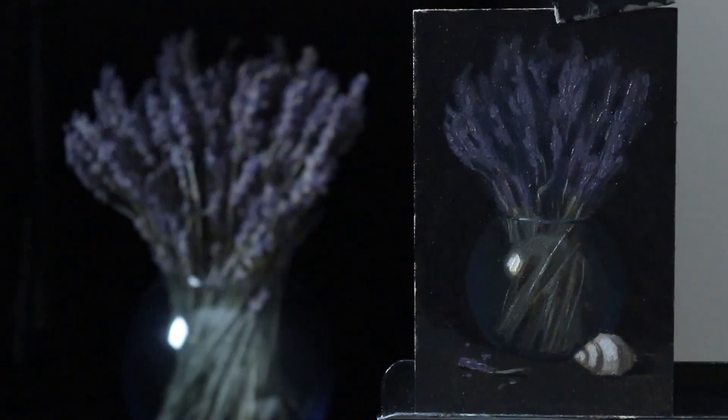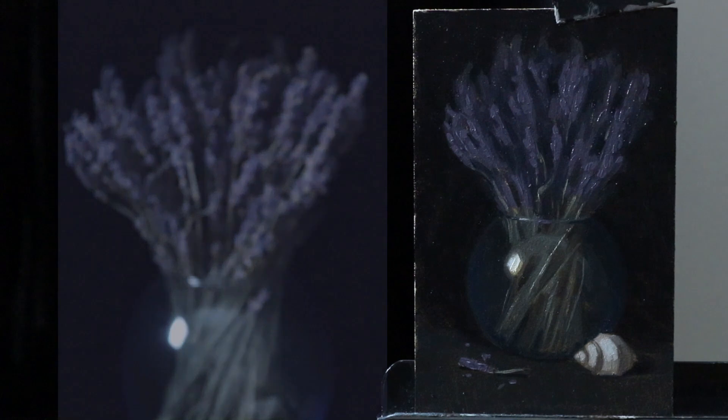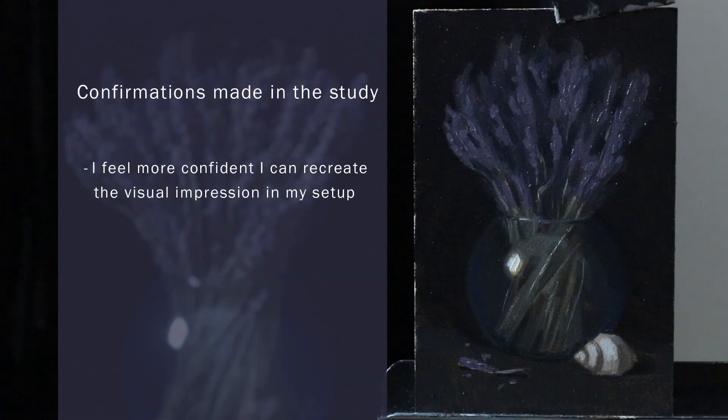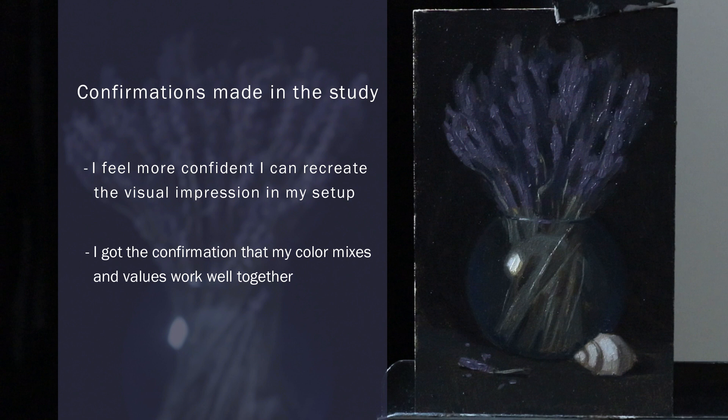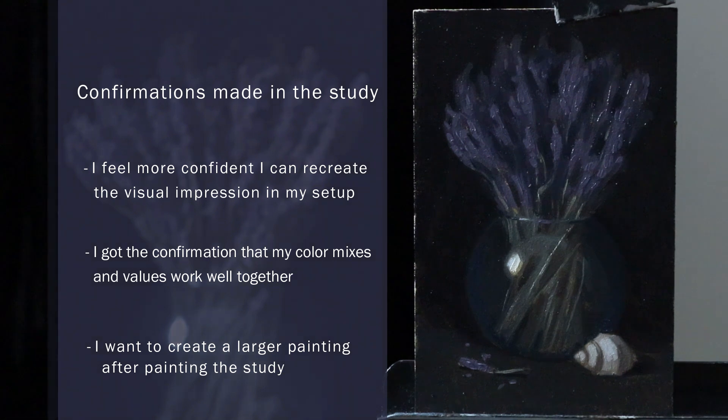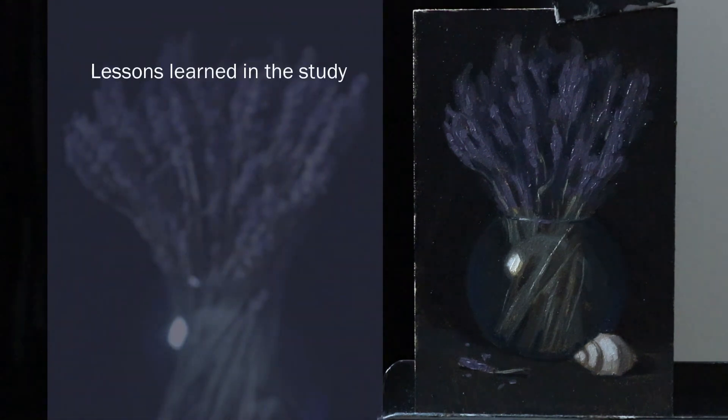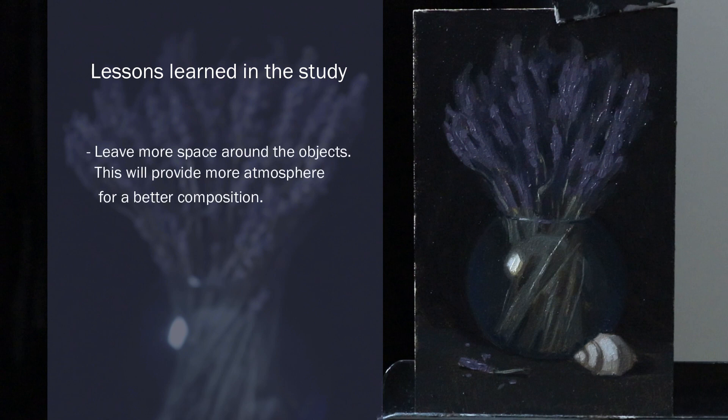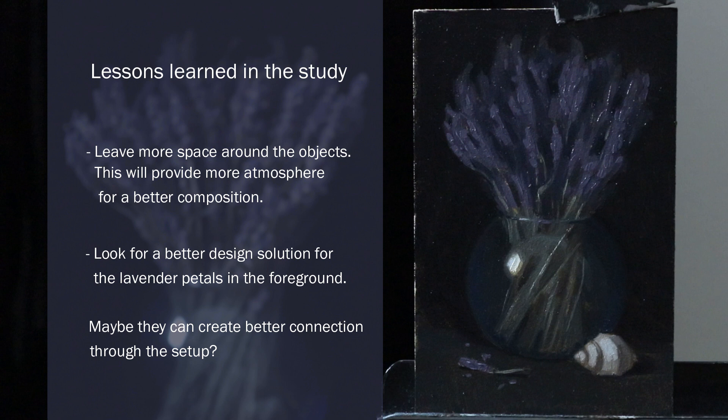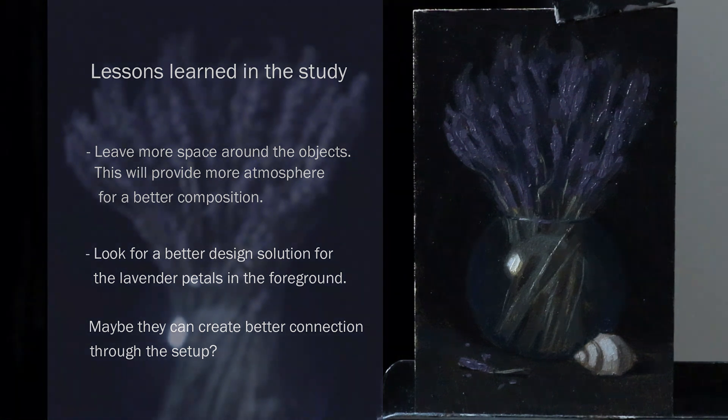Okay, so now I think I will call this study done. I now feel I have explored the visual impression of my setup and I also feel confident in the color mixes and values I have chosen for this painting. Painting this study has made me certain that I want to make a larger painting with this setup, though I think I will leave more space around the objects in my main painting. I feel like the space around the setup in my study is a little bit too tight and I want to create more atmosphere and air around it. I also think I will look more into a clever way to use the lavender petals in the foreground to create a more harmonious design. Maybe I'll place them more between the flowers and the shell to create more interest in the foreground.